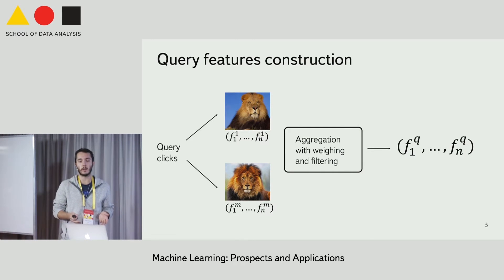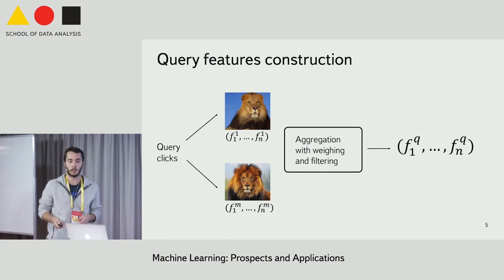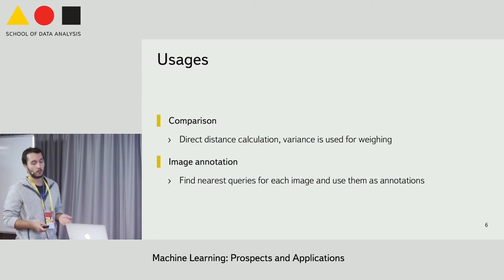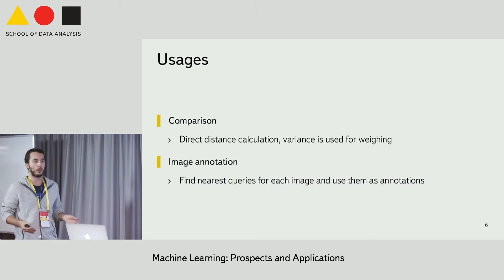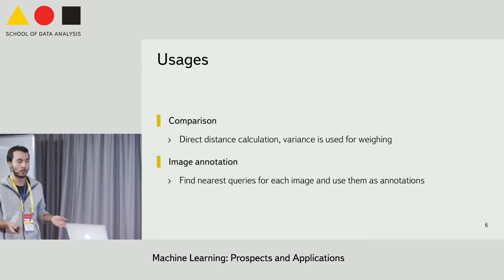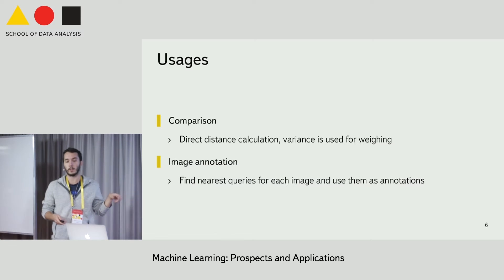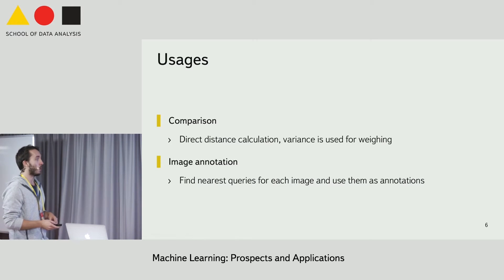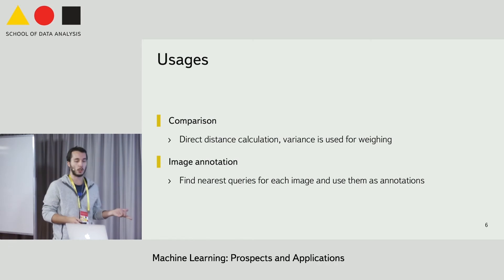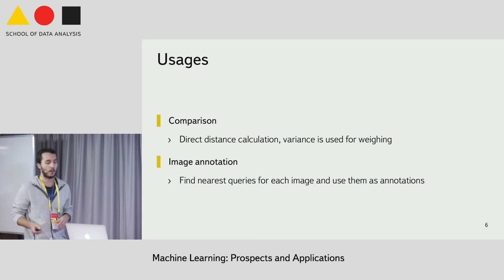As a result we have a query feature vector that resides in the same vector space as the image ones. The usage of such features is obvious: we can compare images and queries by computing Euclidean distance, with added weights based on per-coordinate variances for each particular query. Besides that, we considered building image annotations based on these features, but the results of the annotations are still not very good, so we will test them more.